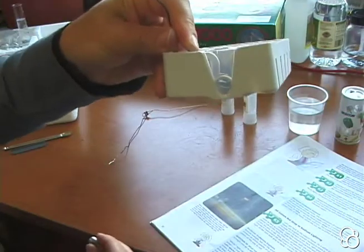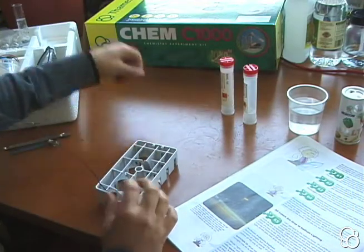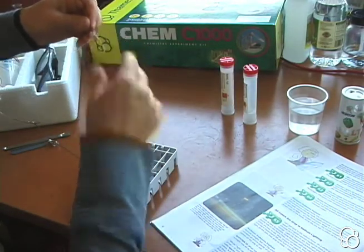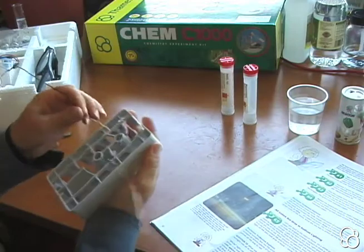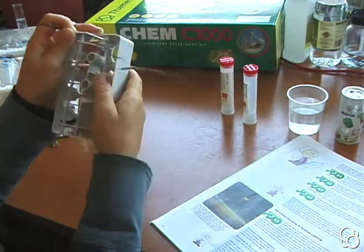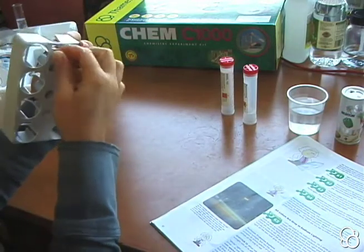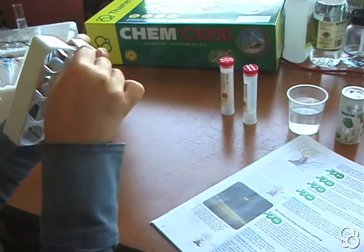This is where the light bulb is going to go. Then the other wire, you're going to take it and put it through this other little hole down here at the bottom. Stick it through one side and then put it back in on the other side.